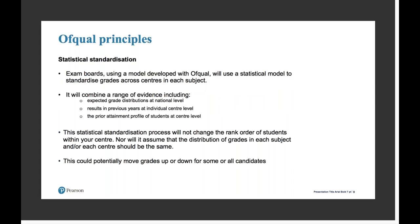Once centres have submitted all of the grades and rank order, awarding organisations will use statistical standardisation. The model for this is being developed with Ofqual and will be used to standardise grades across centres in each subject. It will combine a range of evidence that includes expected grade distribution at national level, results in previous years at centre level, and prior attainment profile of students at centre level. Importantly, it won't change the rank order of students within a centre and will not assume the distribution of grades in each subject or centre should be the same. However, this does mean the centre assessment grade could potentially go up or down for some or all candidates within a centre.